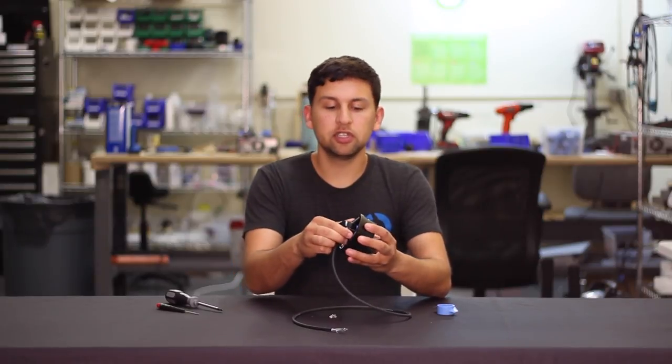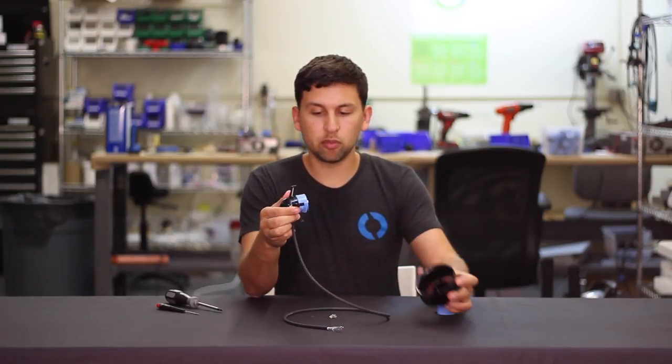Once you've removed the four screws you can separate the nozzle from the rest of the motor by simply pulling them apart.